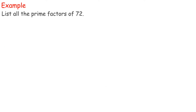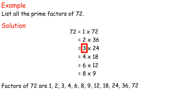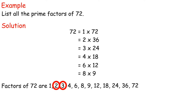Example: List all the prime factors of 72. Solution: 72 equals 1×72, 2×36, 3×24, 4×18, 6×12, 8×9. Factors of 72 are 1, 2, 3, 4, 6, 8, 9, 12, 18, 24, 36, 72. Among these factors, 2 and 3 are prime numbers. Thus, prime factors of 72 are 2 and 3.